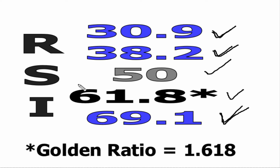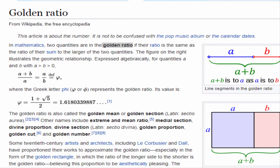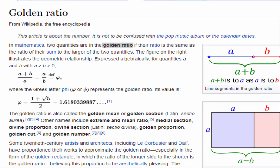These numbers are all derivations of the same number. In fact, the 61.8 number comes from the golden ratio of 1.618. You can get details by going to the Wikipedia page on the golden ratio, where you'll find information about this constant — 1.618. That's where all those numbers come from.